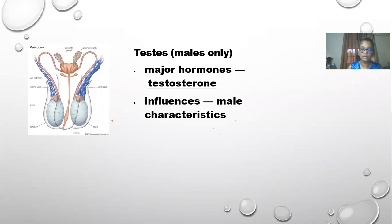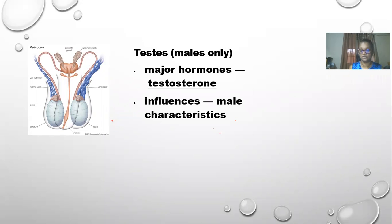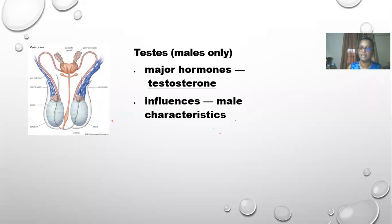Other Cushing's conditions include thin skin, easy bruising, irregular periods, and decreased sex drive and fertility in males. Clinical treatments include medications, radiation therapy, or surgery. Addison's disease occurs when the adrenal glands don't produce enough cortisol or aldosterone. Symptoms include fatigue, weight loss, abdominal pain, low blood sugar, nausea, vomiting, diarrhea, irritability, salt craving, and irregular periods.